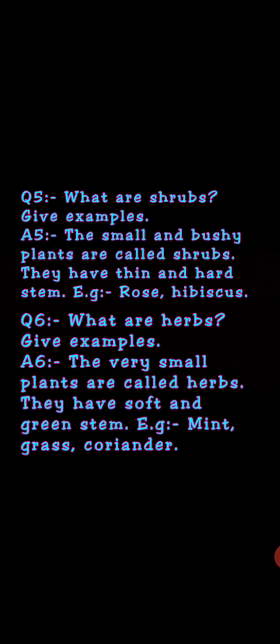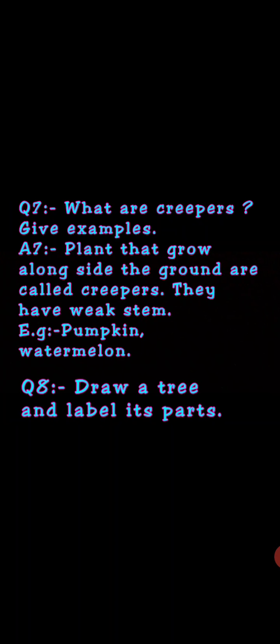Question number seven: What are creepers? Give examples. Plants that grow alongside the ground are called creepers. They have a weak stem. For example, watermelon.